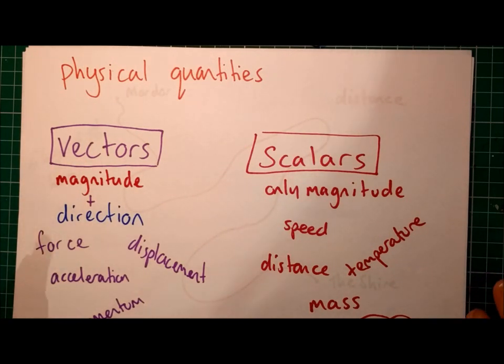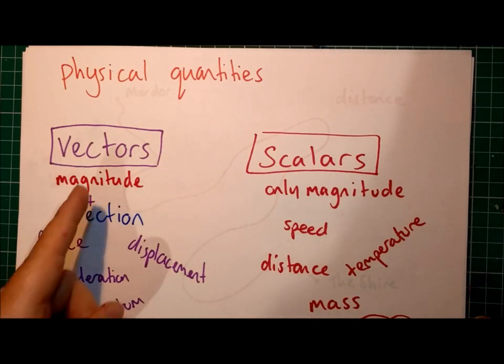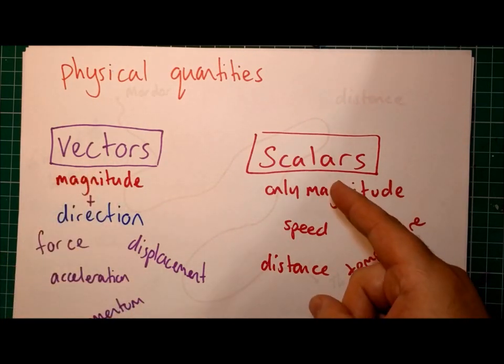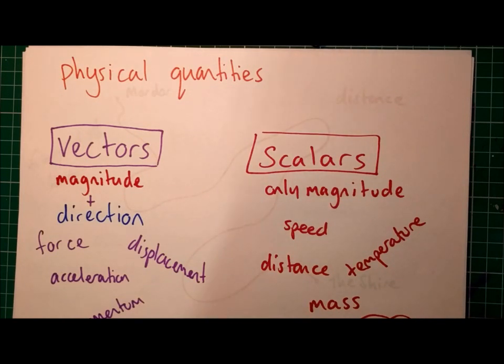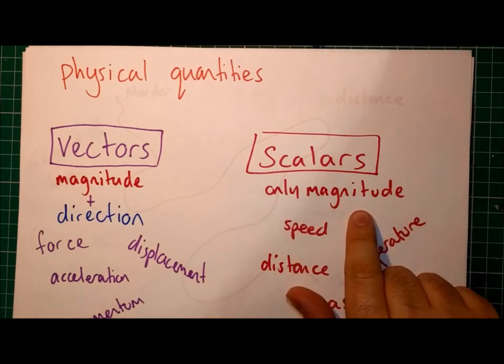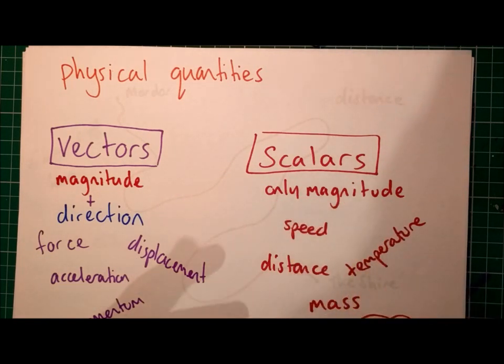But before we get any further, we need to split all the physical quantities we know into two kinds, vectors and scalars. Now, scalars you're probably very familiar with. These are quantities that only have magnitude.